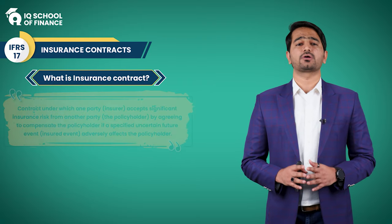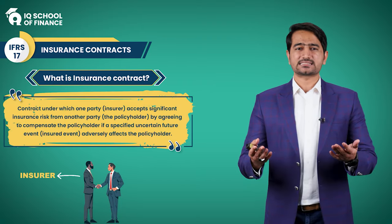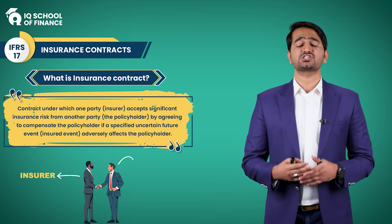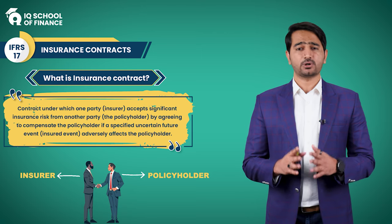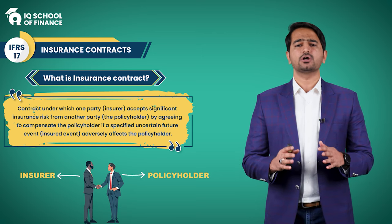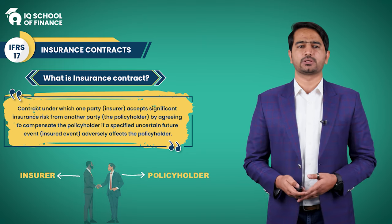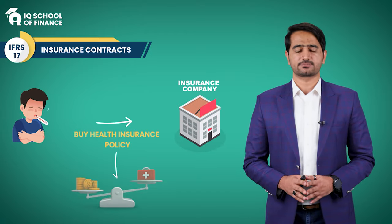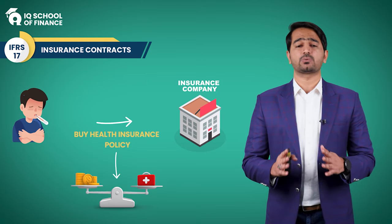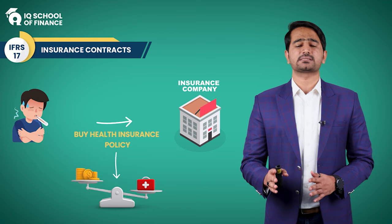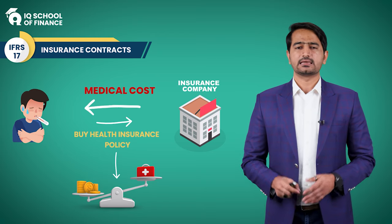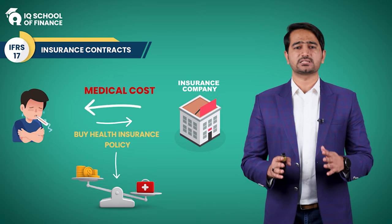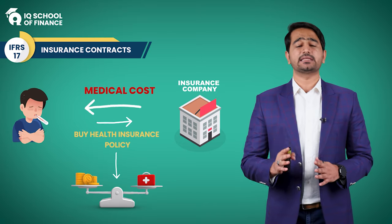Now let's understand what an insurance contract is. According to the official definition, it is a contract under which one party — the insurer — accepts significant insurance risk from another party — the policyholder — by agreeing to compensate the policyholder if a specific uncertain future event adversely affects them. For example, consider a health emergency as the significant insurance risk: a person buys a health insurance policy to cover medical expenses. If that person faces a serious health issue requiring expensive treatment, the insurance company compensates them for the medical cost. This underscores that insurance is about managing the risk of uncertain future events rather than predicting events with certainty.